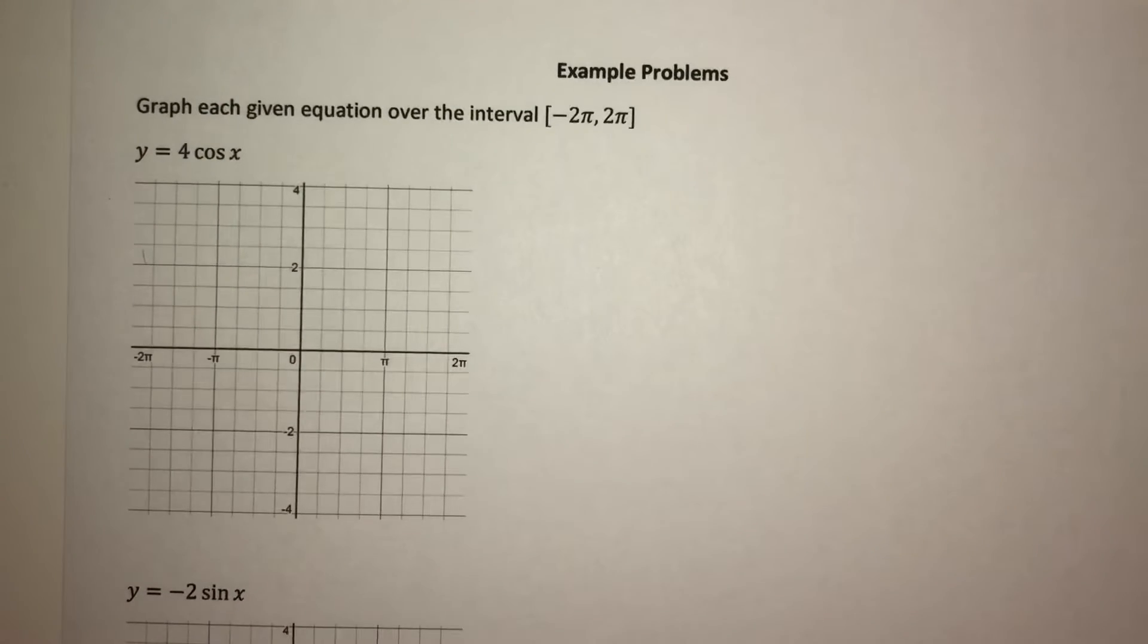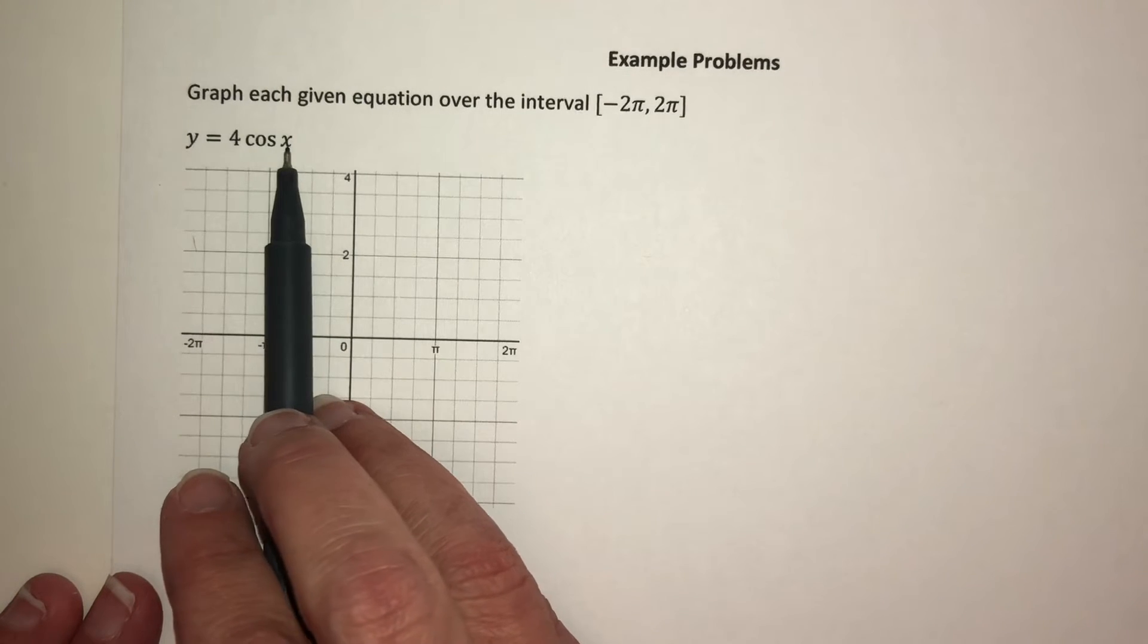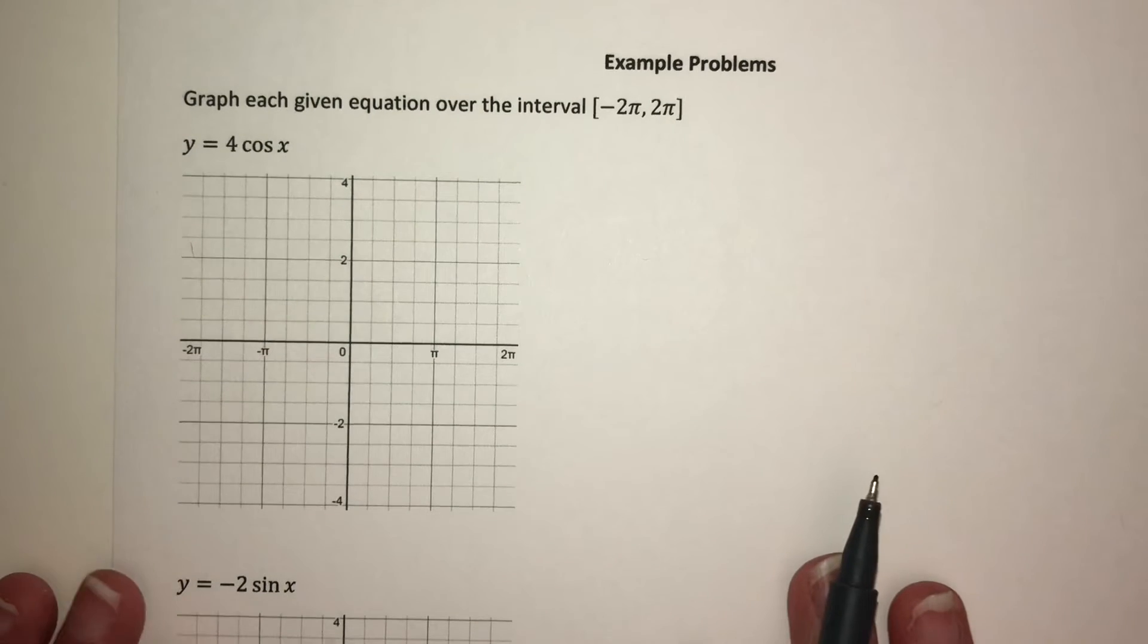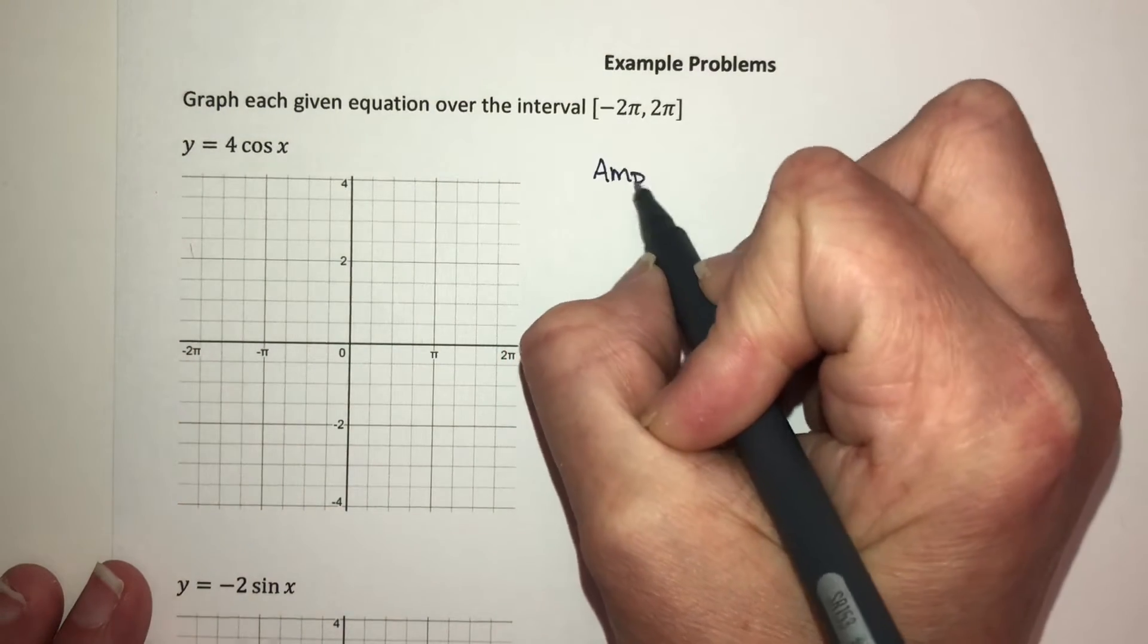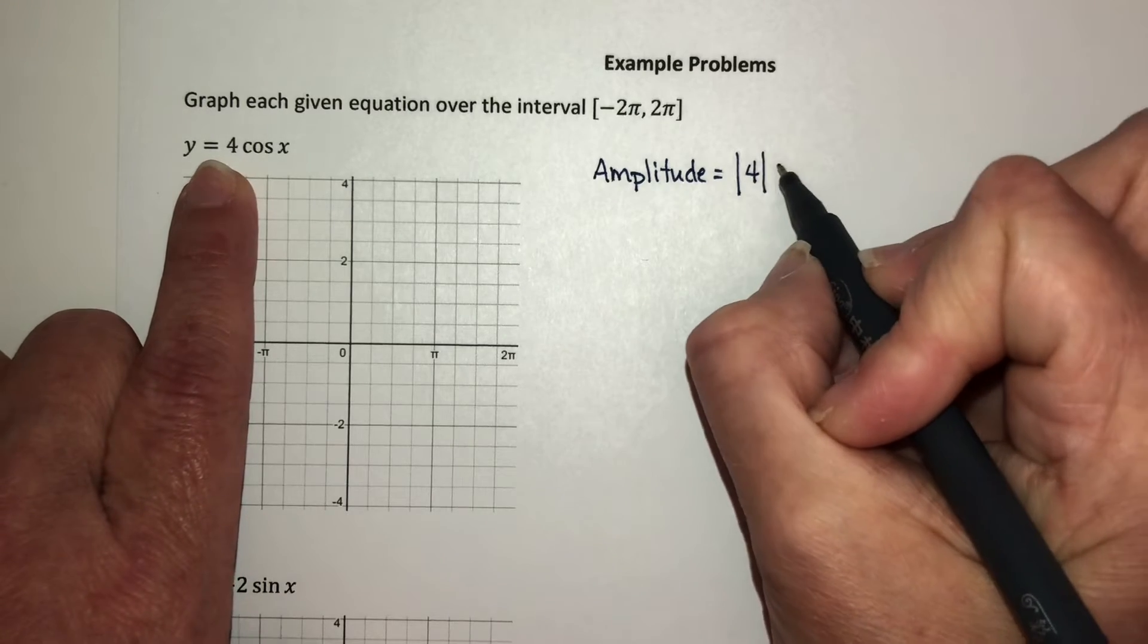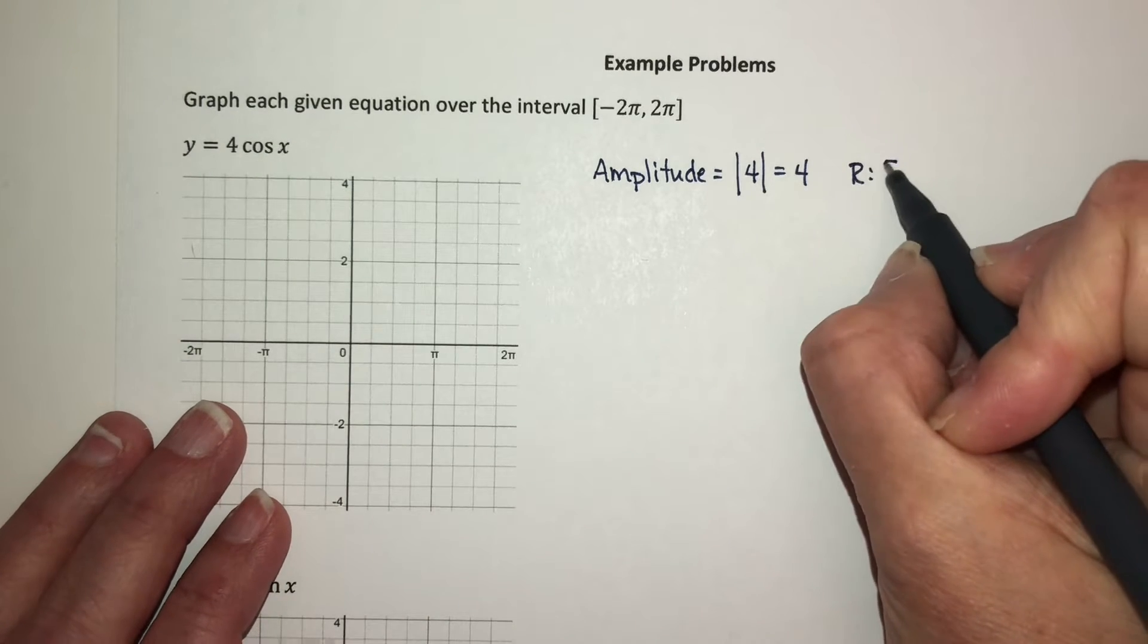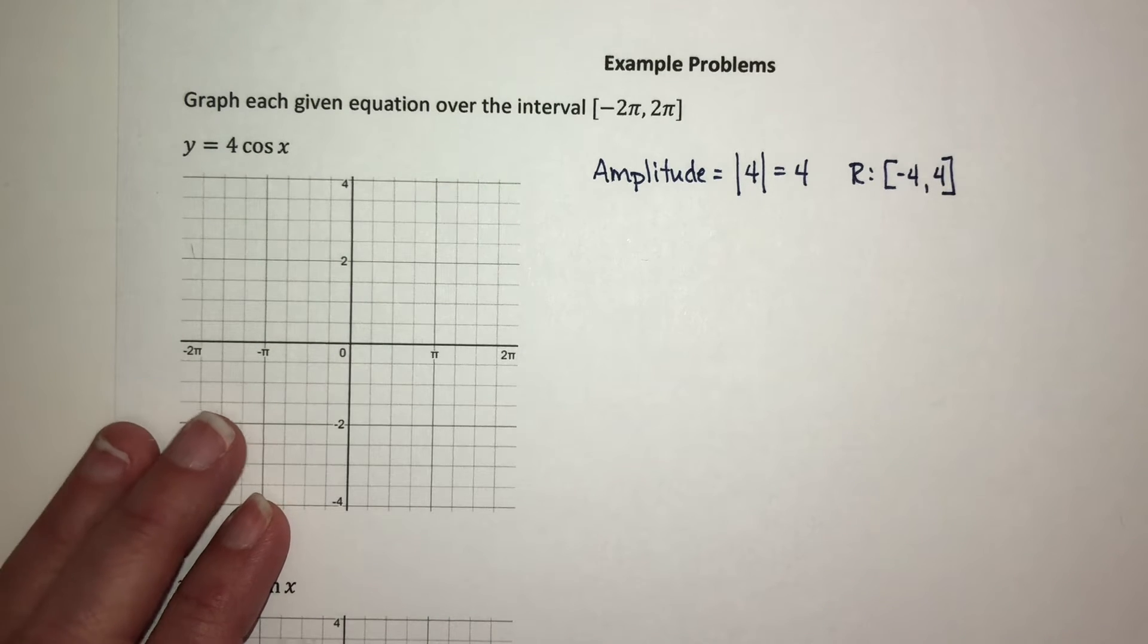Now let's work an example problem. I want to graph y = 4 cos x over the interval negative 2π to 2π. So what do I know? I know my amplitude is the absolute value of this number in front here. Absolute value of 4 is 4. So that tells me that my range is going to be from negative 4 to positive 4.